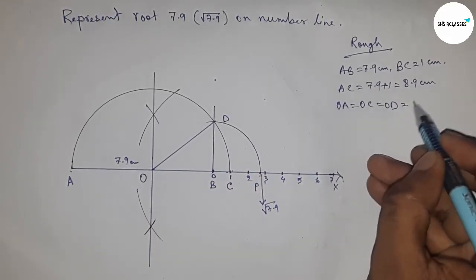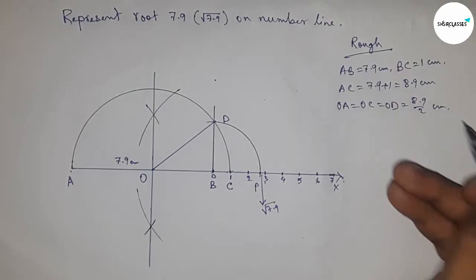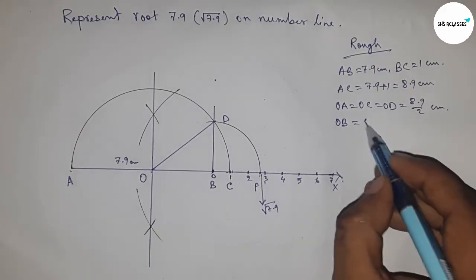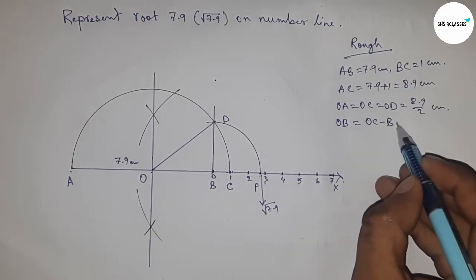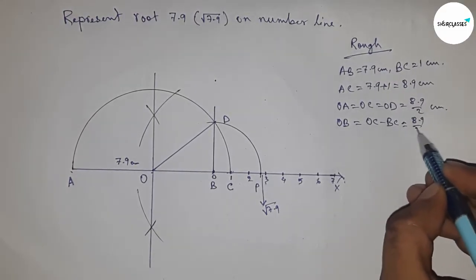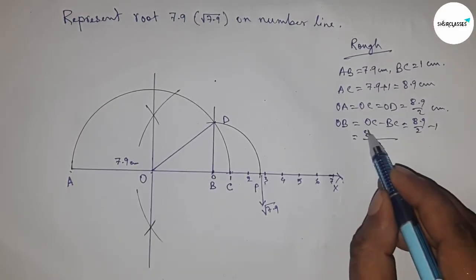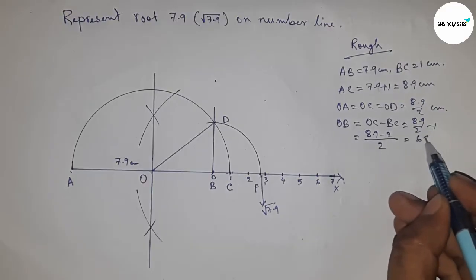The radius OA, OC, and OD equal 8.9 by 2 centimeters. OB equals OC minus BC, so putting the value of OC and BC and after calculating, this is 6.9 by 2 centimeters.